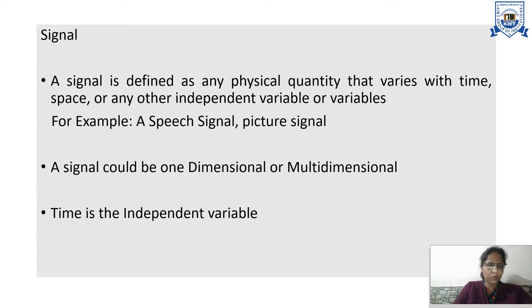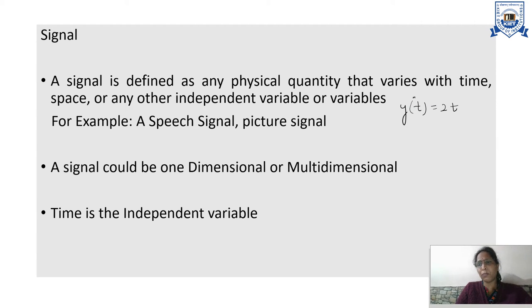A function can be written as: let's suppose y(t) is a function and it equals twice of t. Here y is a function of t and it is a function of only one variable, and this variable is called the independent variable. Why is it called the independent variable? Because the value of t is not depending on y, whereas the value of y is depending on the value of t. So y is the dependent variable and t is the independent variable.